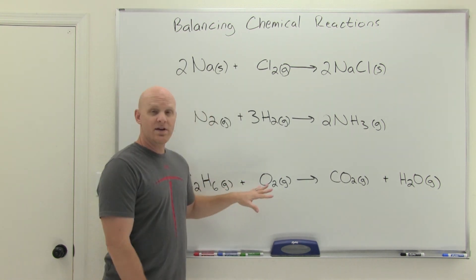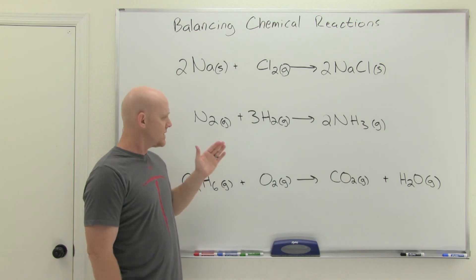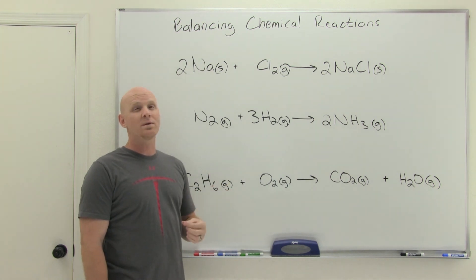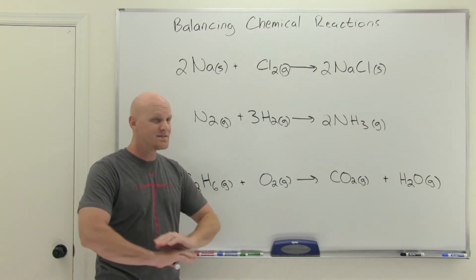So first thing you want to do then is recognize where you don't start balancing a chemical reaction. If you ever have a species that shows up in more than one place on the same side of the arrow, make it the last thing you do.